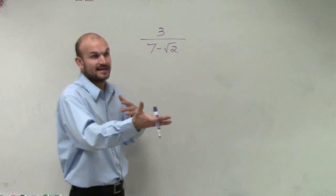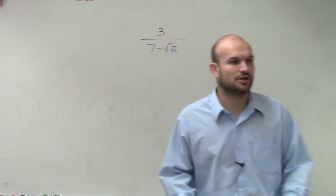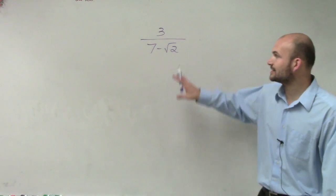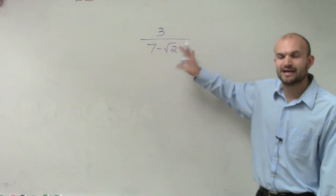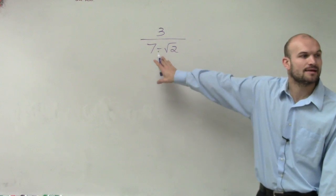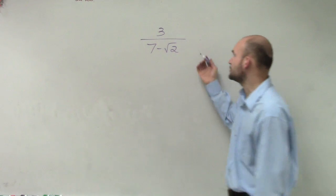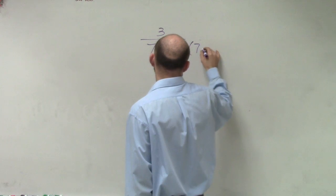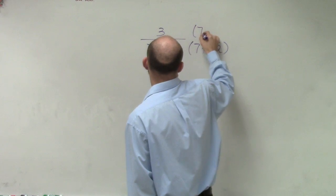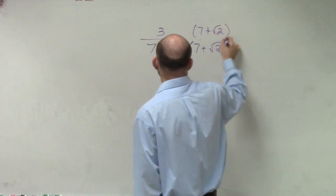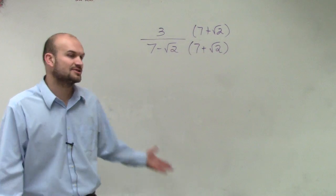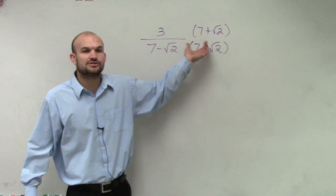I'm not going to go through the whole spiel of why we're doing what we're doing since I talked about it last time, but when you have a binomial with a radical in your denominator, we have to get that radical off the bottom. So what we're going to do is multiply by the conjugate. The reason why is because when you multiply by the conjugate, you produce a difference of two squares.